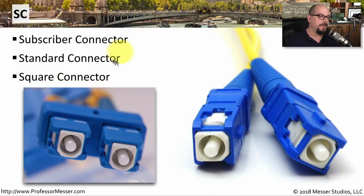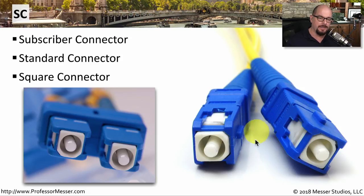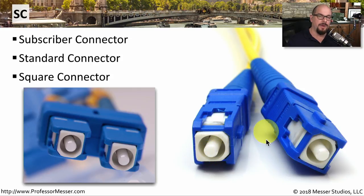The SC connector is commonly referred to as a subscriber connector, a standard connector, or visually you can see it is a square connector. The square connector on these ends is very different than the rounded connector on the ST connector. They've also got plastic keys on these sections of the square so that you're plugging it in the right way to the networking equipment. You still have a round ferrule in the middle containing your fiber optic, and these push into a connection and then pull out, which is very different than the bayonet we saw with the ST connector.